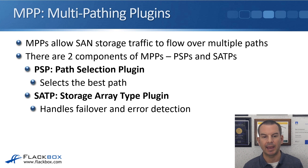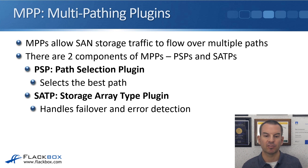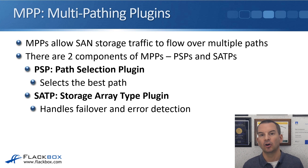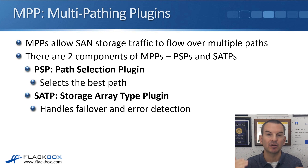The last topic is MPP, which is multipathing plugins. MPPs allow SAN storage traffic to flow over multiple paths. There are two components of MPPs: PSPs and SATPs. PSP is the path selection plugin, which selects the best path. For example, if you've got a four-node cluster and the LUN is on node 1, the ESXi host should choose a path that terminates on node 1, not node 4 — PSP controls that. SATP is the storage array type plugin that handles failover and error detection, so if a path goes down, it detects that and fails over to another path.